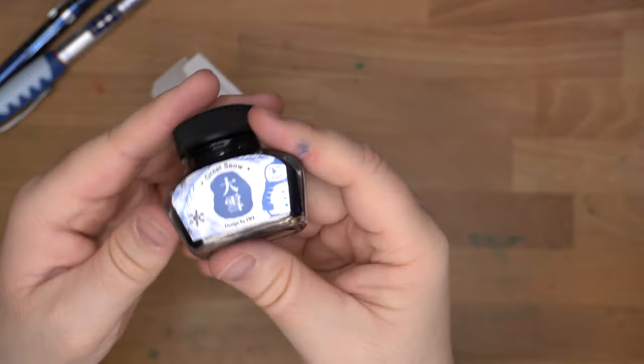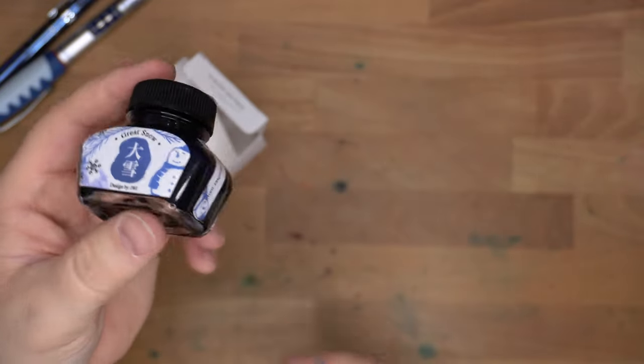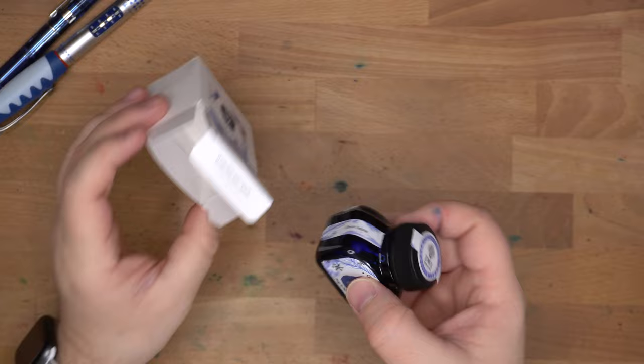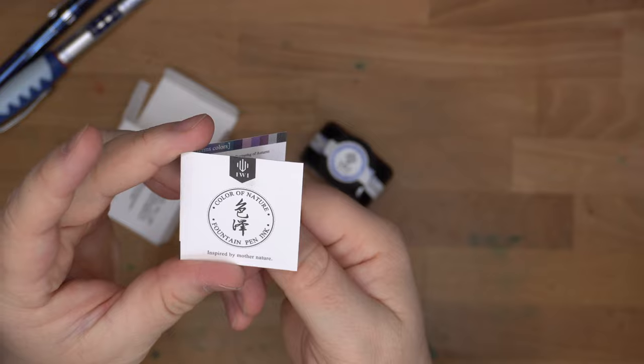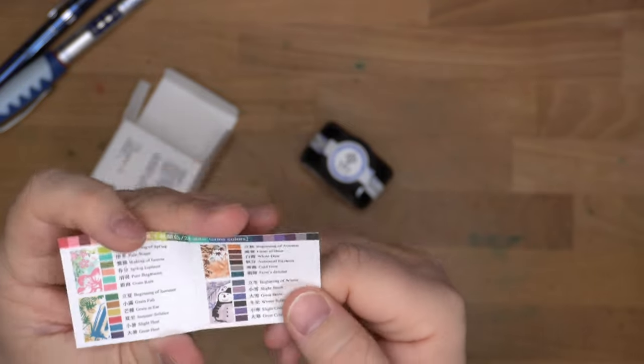All right. On the bottle though, it doesn't actually tell you how much ink is in here. This is a 30ml bottle and these go for $12 over at Vanness Pens. Here's the other thing, which is a little pamphlet. IWI, Color of Nature, Inspired by Mother Nature.